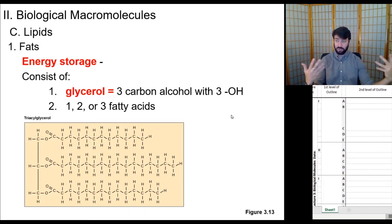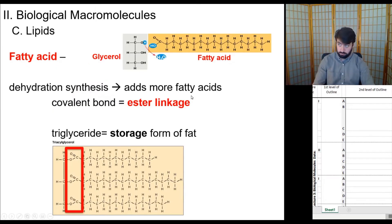This is what it can look like when you have all three stuck on here. You call it a triglyceride or a triacylglycerol. How do you take those fatty acid chains and stick them onto your glycerol? You use dehydration synthesis to add more of those fatty acid chains to the glycerol through covalent bonds. These covalent bonds that get formed between the fatty acid and the glycerol are called ester linkages. And a triglyceride is a storage form of fat where those glycerols are fully filled up.